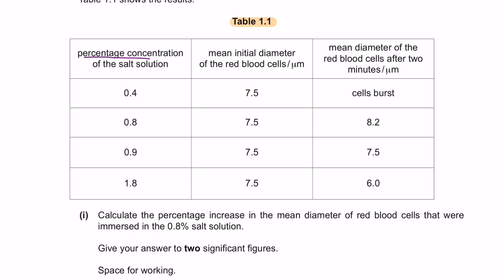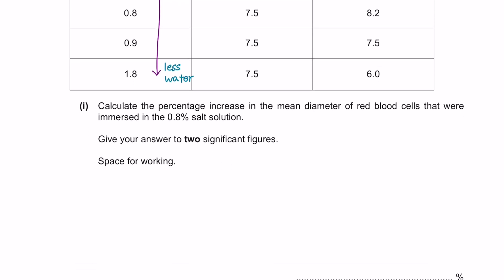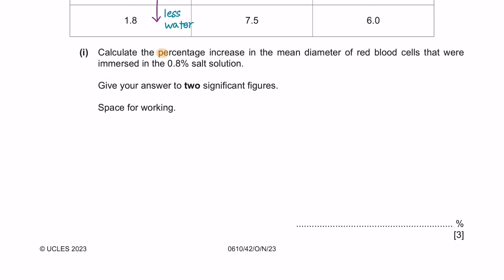So the first column here is about the percentage concentration of the salt solution. So the percentage of salt solution is increasing, meaning that the concentration of water is decreasing. The mean of the initial diameter of the red blood cell is the same, which is 7.5. This column shows the mean diameter of the red blood cells. Question Part 1, calculate the percentage increase in the mean diameter of the red blood cells that were immersed in the 0.8 salt solution. Give your answer to 2 significant figures.